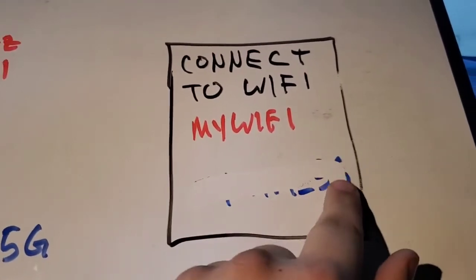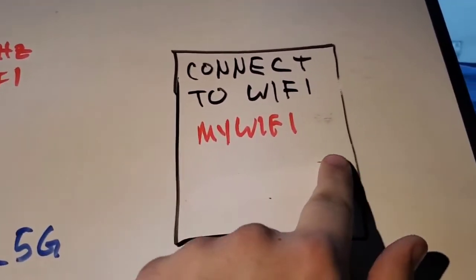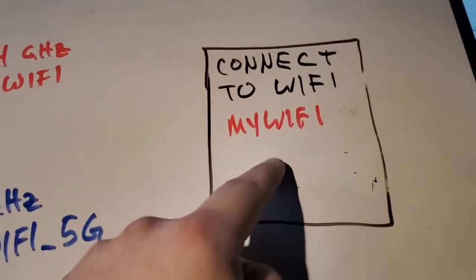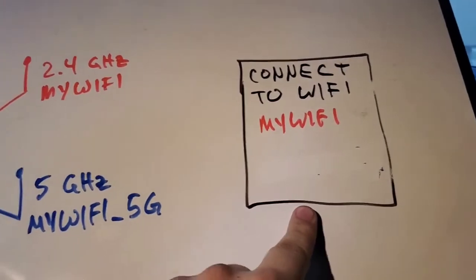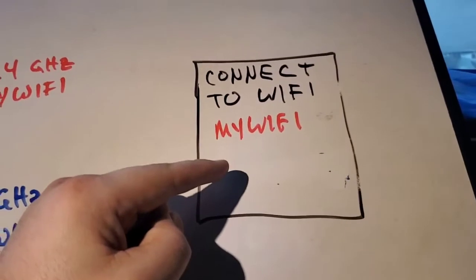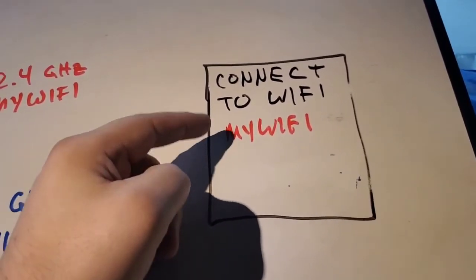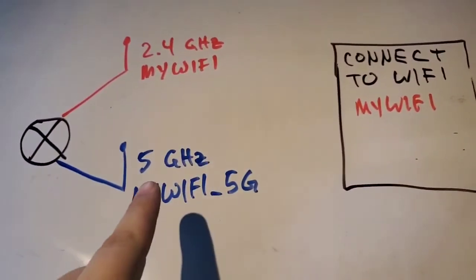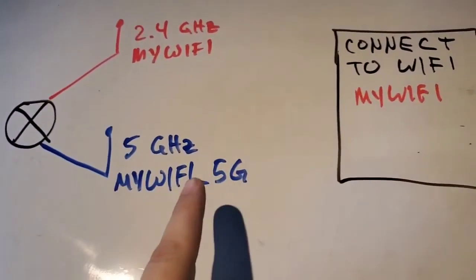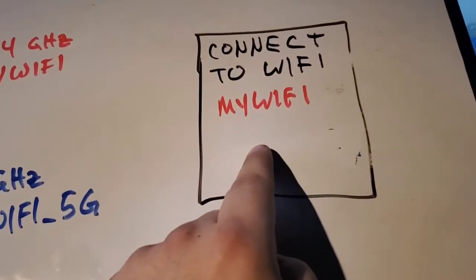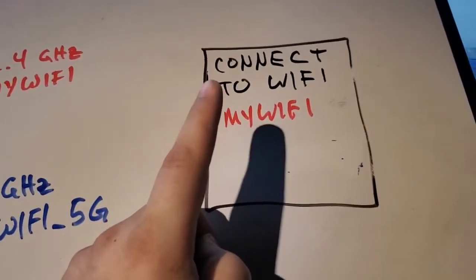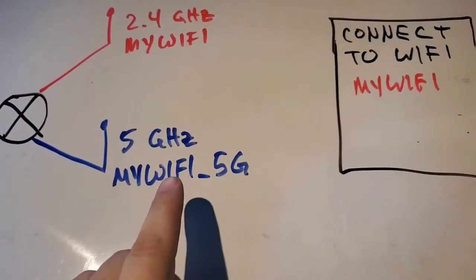Some devices don't support 5G, so they won't even show that network — you won't be able to see it. Even though it exists on the router, the device may not be able to see it because it doesn't support the 5 gigahertz band. The 5 gigahertz band can also be enabled or disabled, same with the 2.4 gigahertz band, so sometimes a network not appearing could simply mean it's been turned off in the router settings.